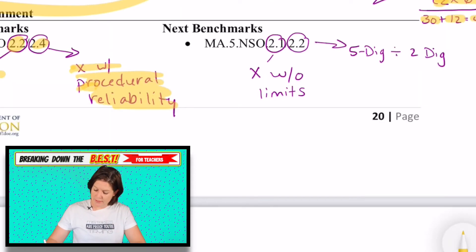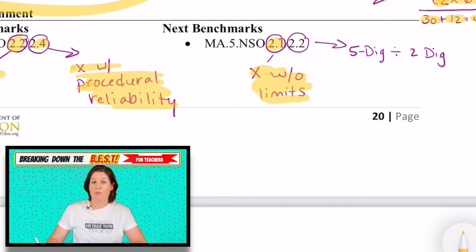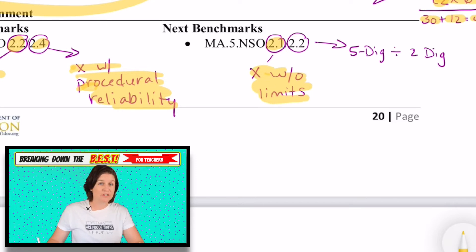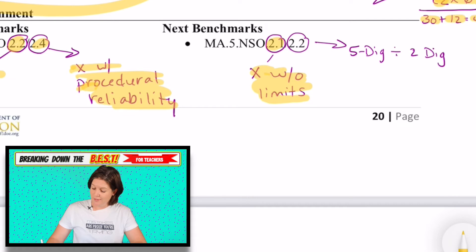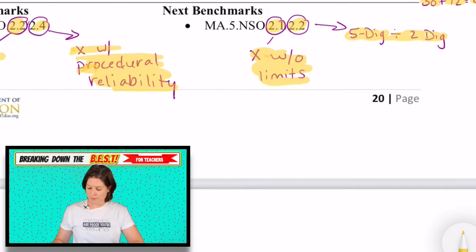In fifth grade, they'll be heading into 5.NSO.2.1, where they're multiplying without any limits — you can be multiplying a five-digit number times a three-digit number — and also dividing five digits by two-digit numbers.